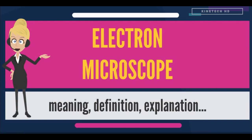The transmission electron microscope uses electrostatic and electromagnetic lenses to control the electron beam and focus it to form an image. These electron optical lenses are analogous to the glass lenses of an optical light microscope.